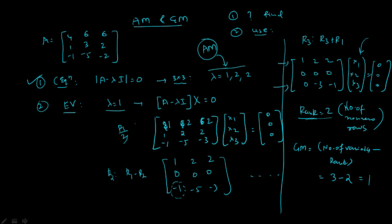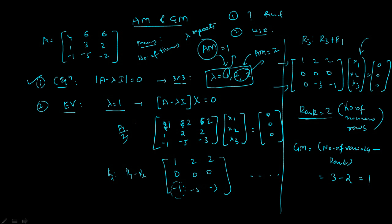When we talk about AM, for lambda equal to 1, AM is 1, and for lambda equal to 2, AM is 2. AM is the number of times a lambda value repeats in the characteristic equation. Lambda equal to 1 appears only once, so AM is 1. Lambda equal to 2 appears twice, so AM is 2. For lambda equal to 1, both AM and GM equal 1.